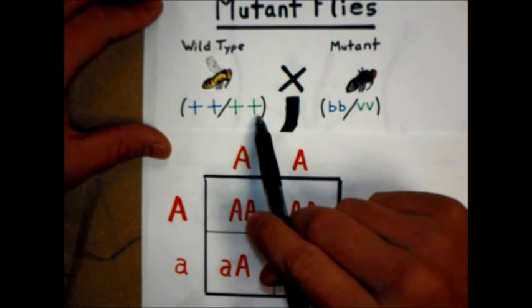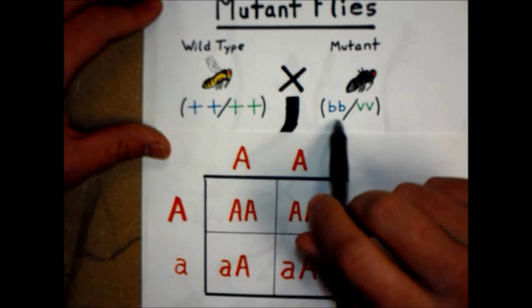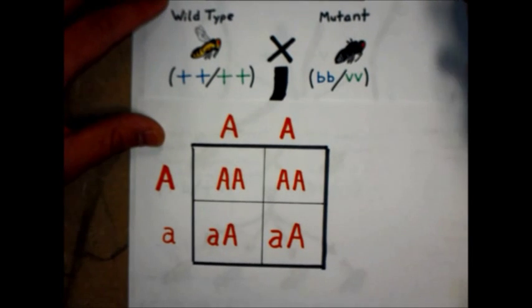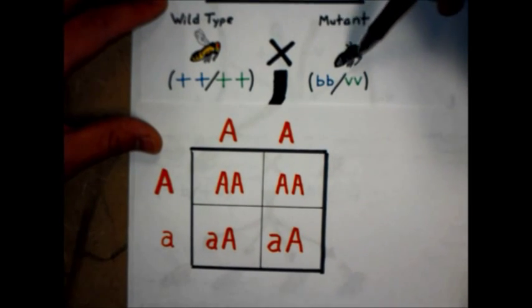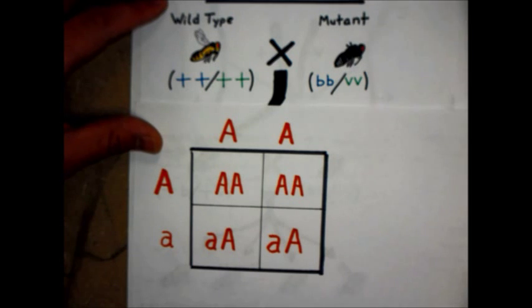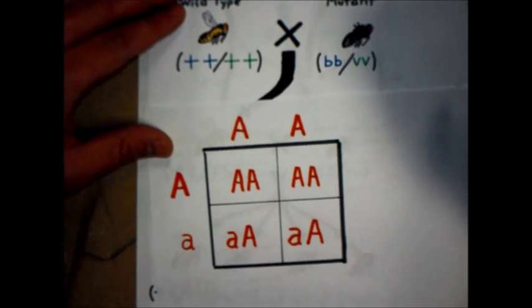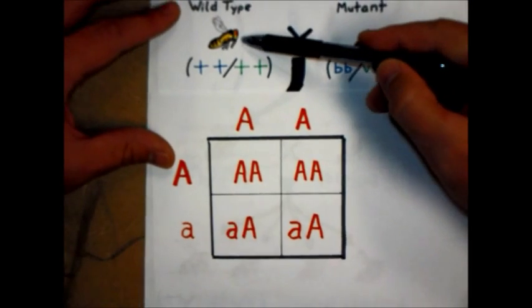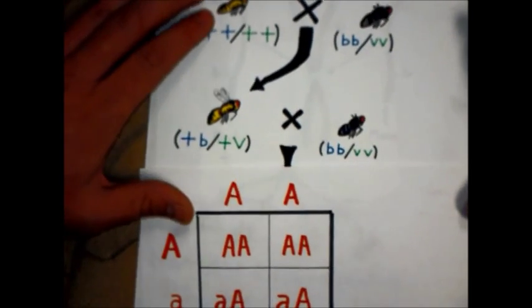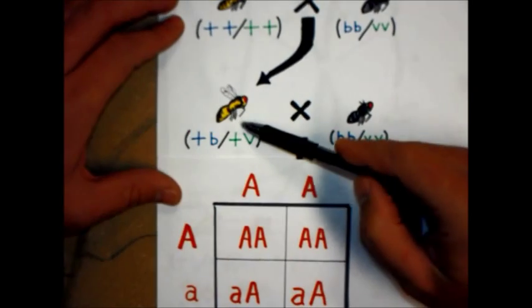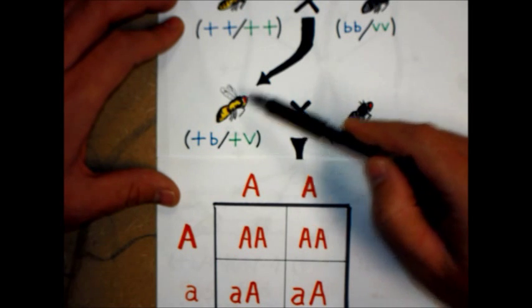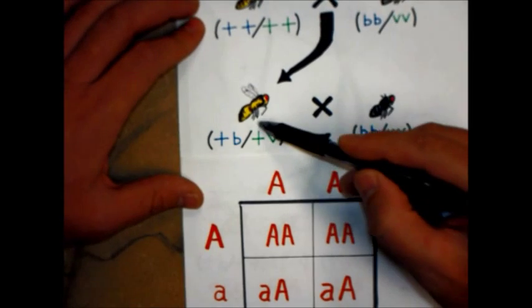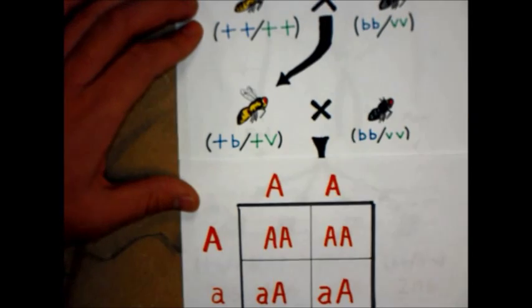So, we used the plus signs to mean wild type, little b for black body, little v for vestigial wings. He bred these mutants until he had purebreds with both mutations, which we'll call double mutants. So he took this double mutant female, bred it with a wild type male. And he got, not surprisingly, a heterozygous of both. And since the mutant alleles are recessive, its appearance is completely wild type.